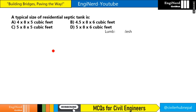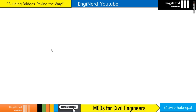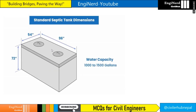This question was asked in the Lumini process exam. For this particular question, if you look at the standard septic tank dimensions, for most residential buildings the water capacity is 1,000 to 1,500 gallons.